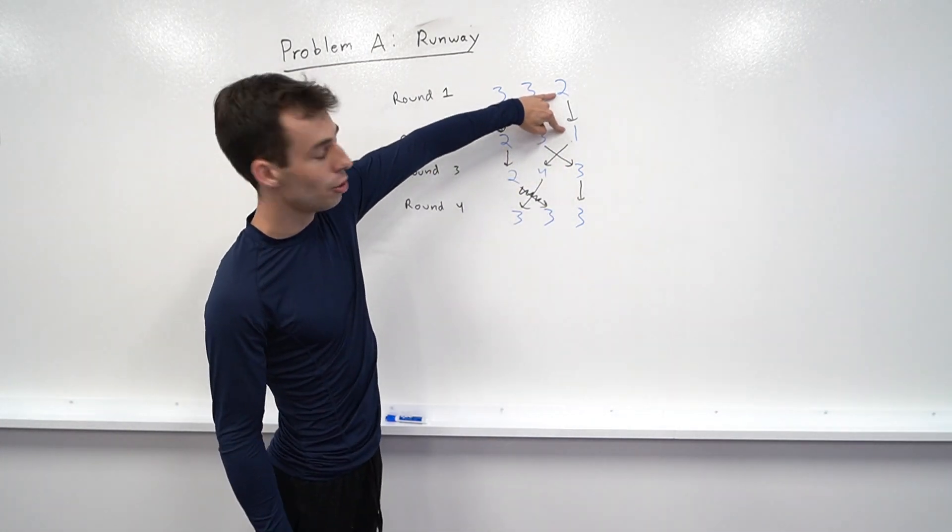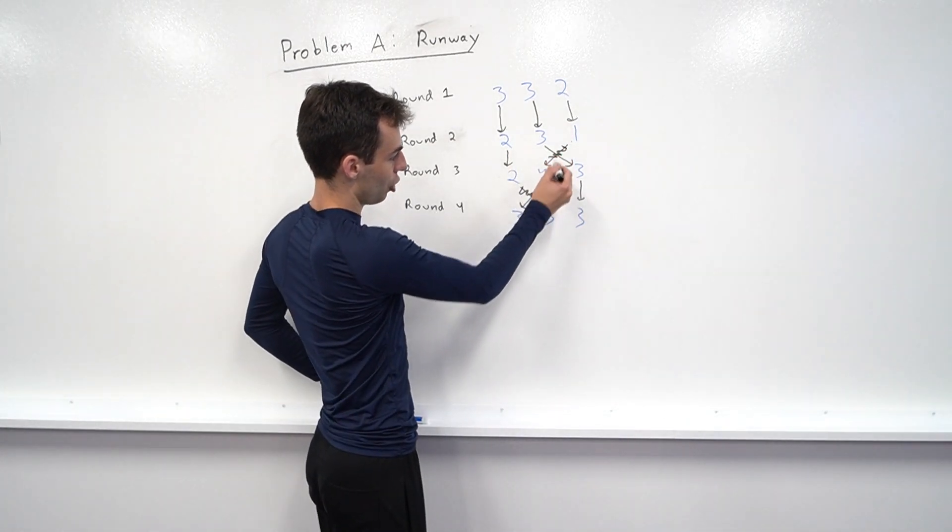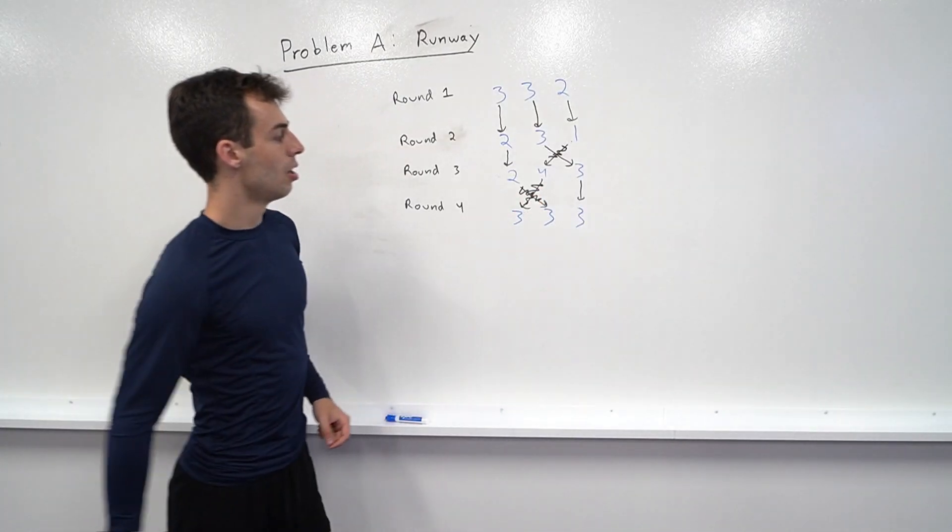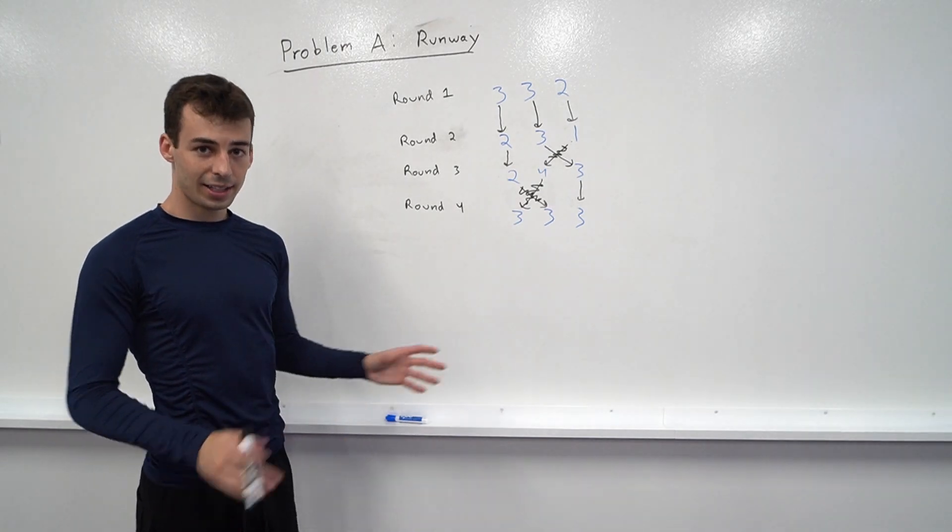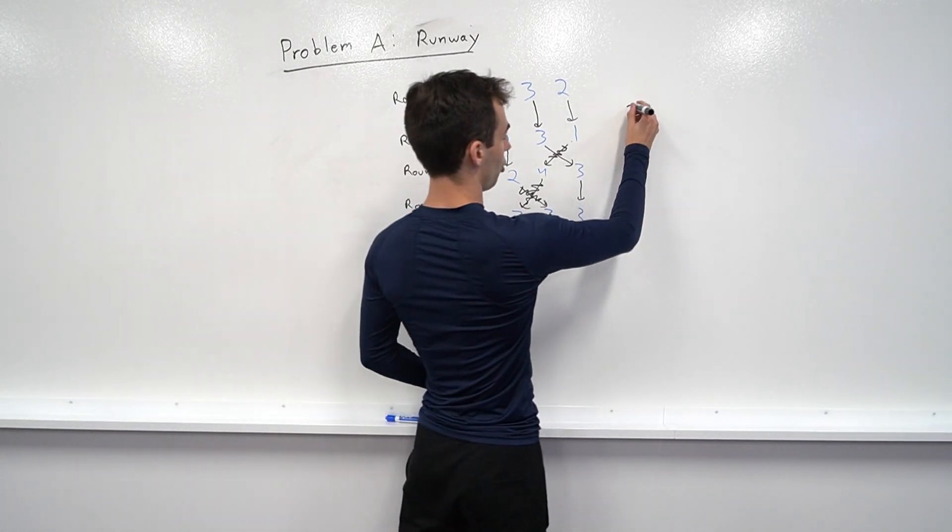This model has to do a quick change here and then we have to pay for this change and this change. So this method of allocating models to positions has a total cost of three.